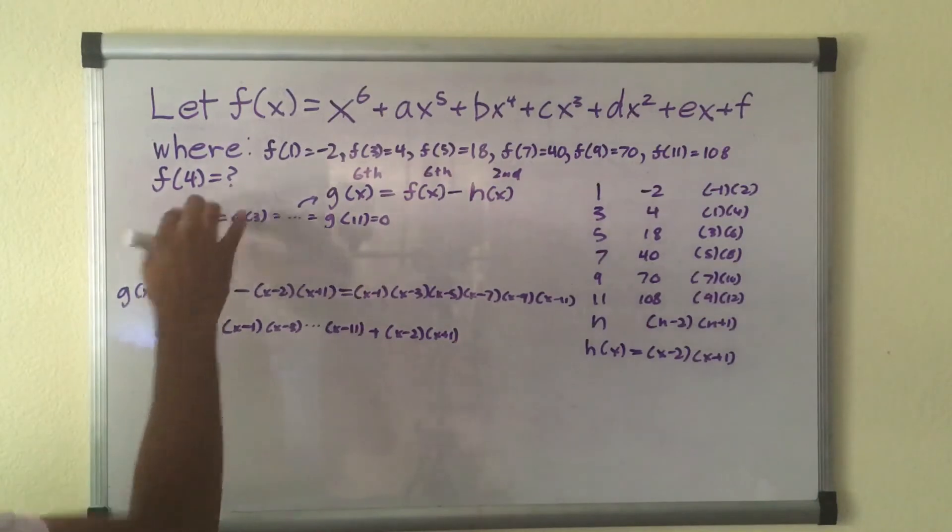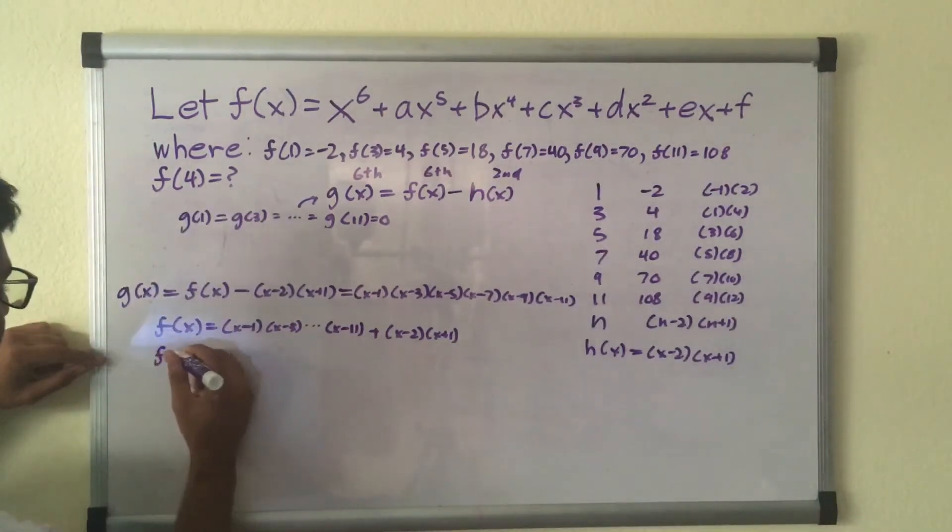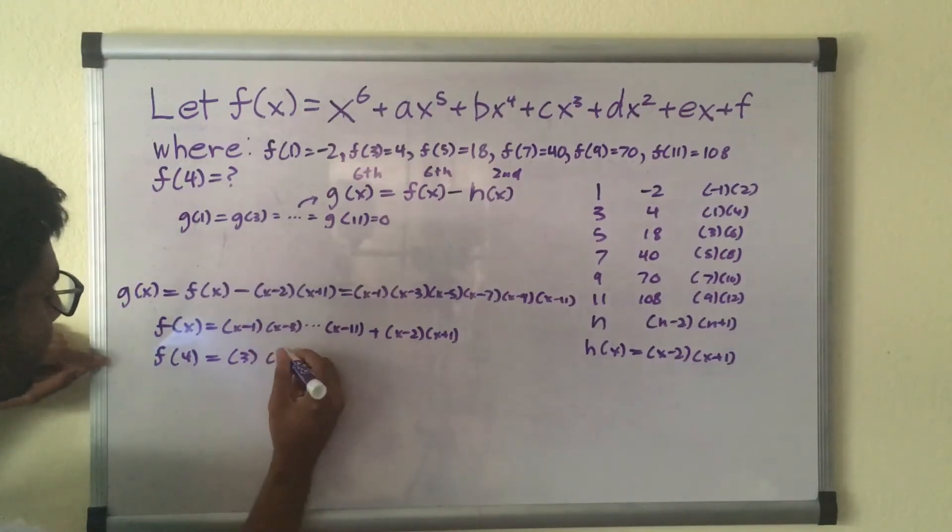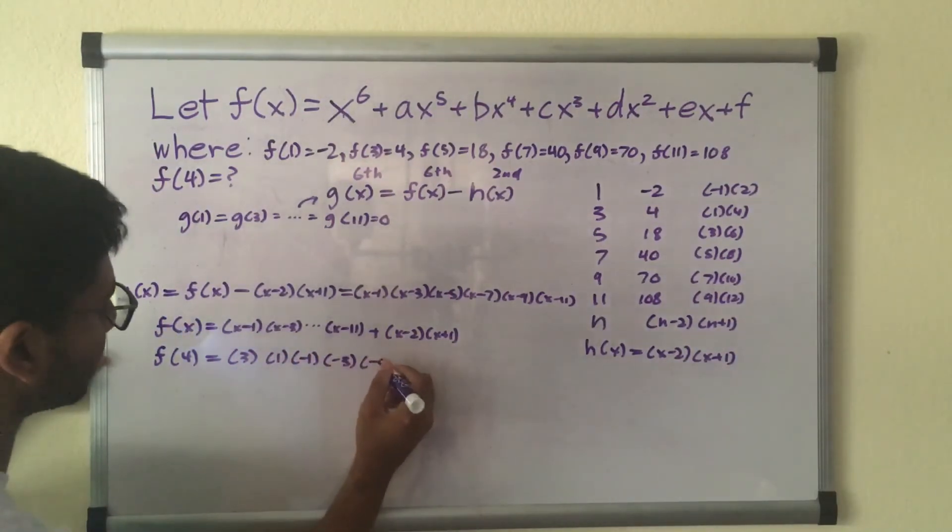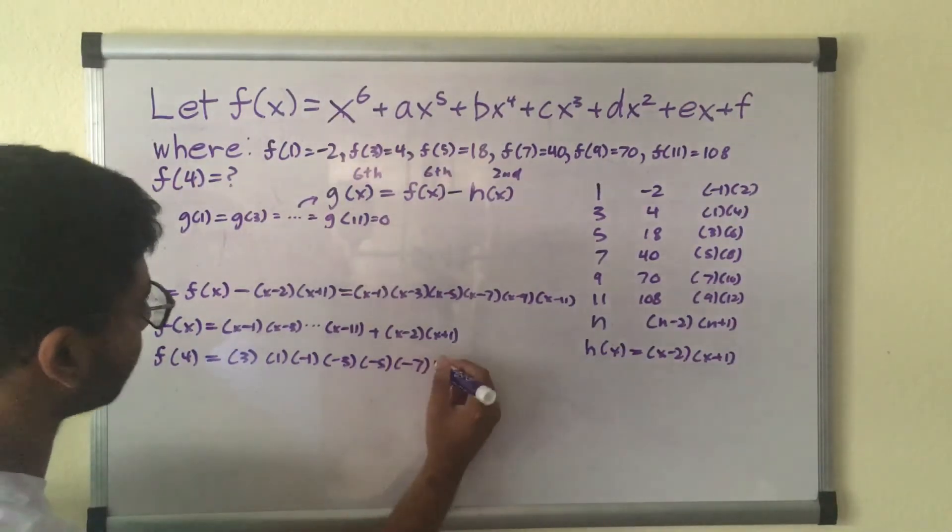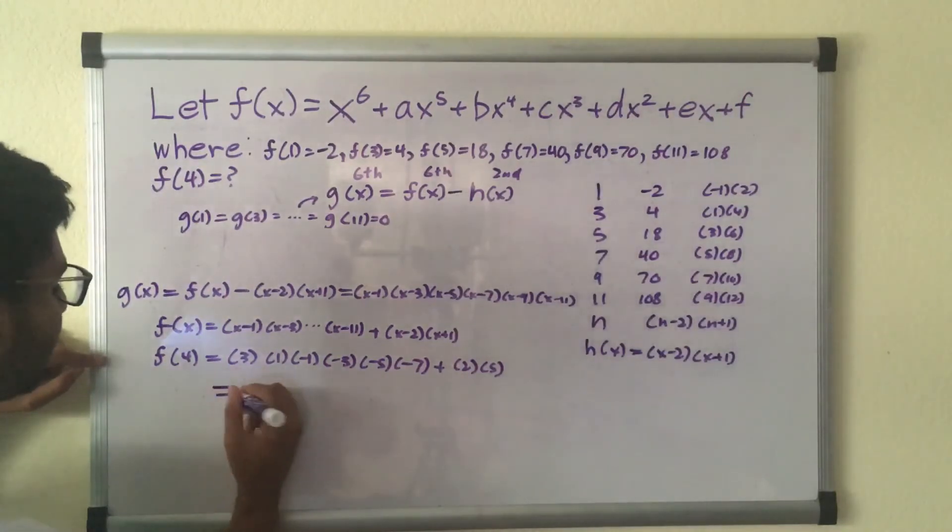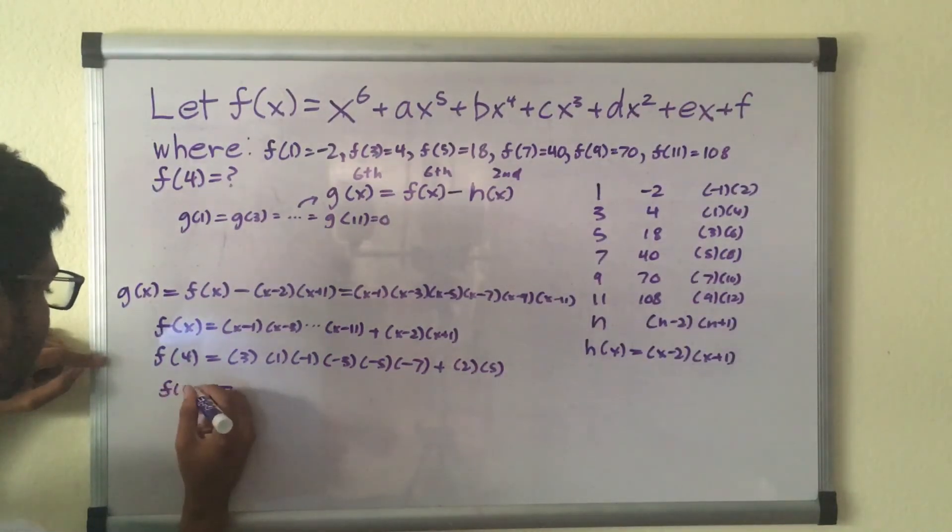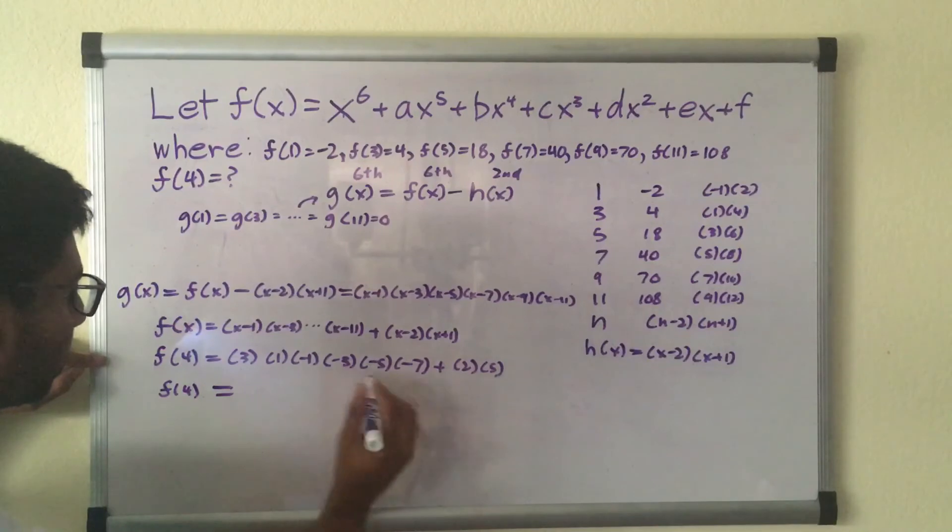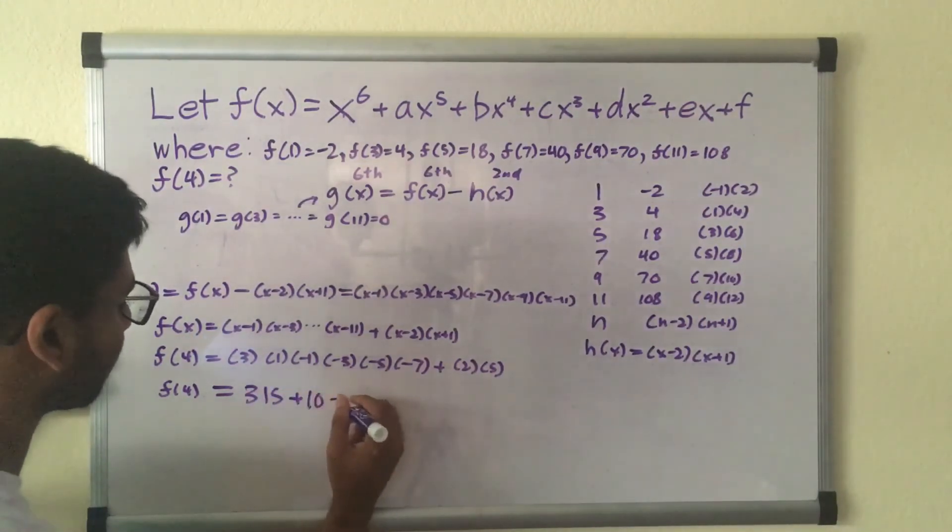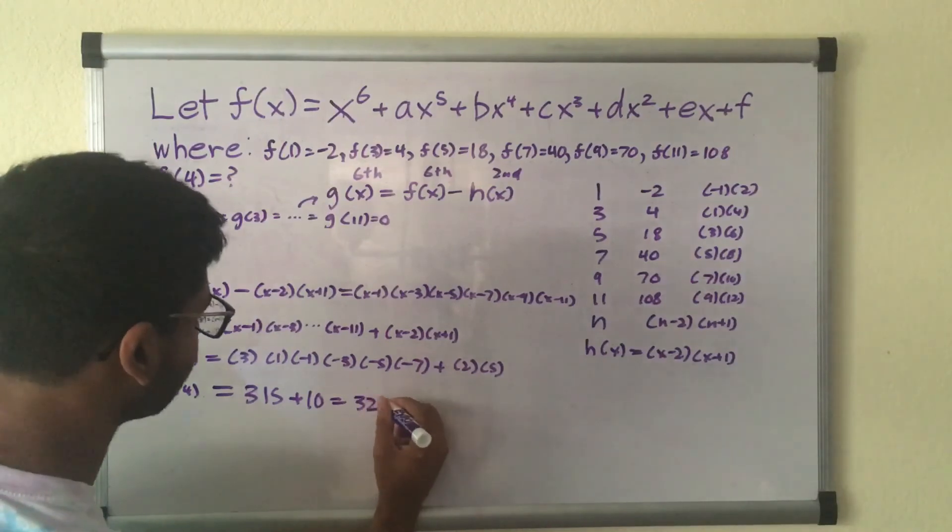All we have left is just to find f of 4. We can do that by doing f of 4 equals 3 times 1 times negative 1 times negative 3 times negative 5 times negative 7 plus 2 times 5. This is equal to 315 plus 10 is equal to 325.